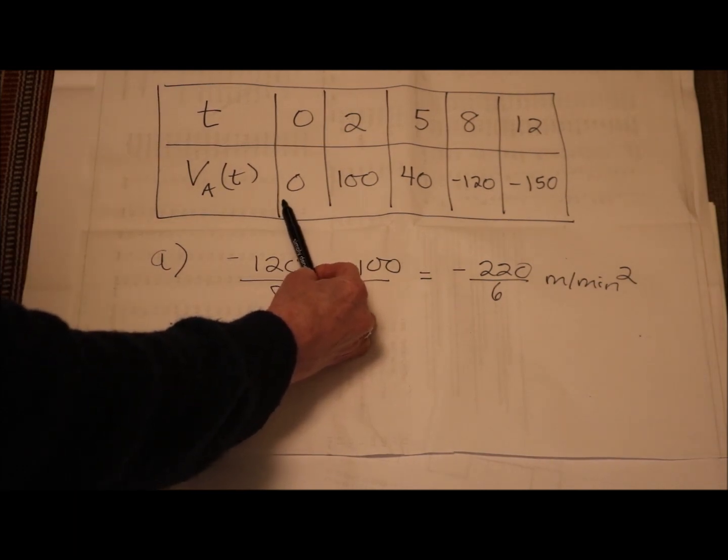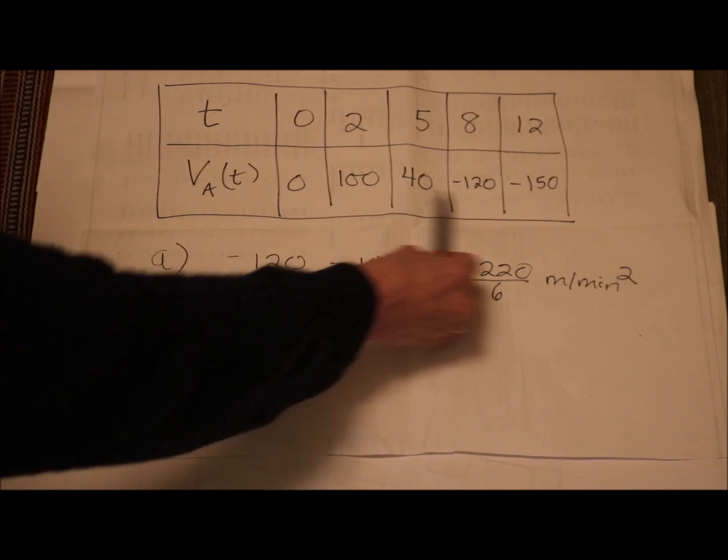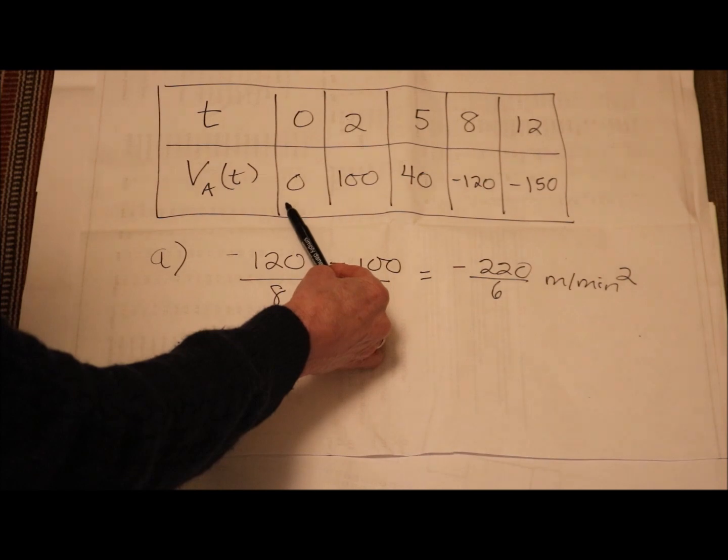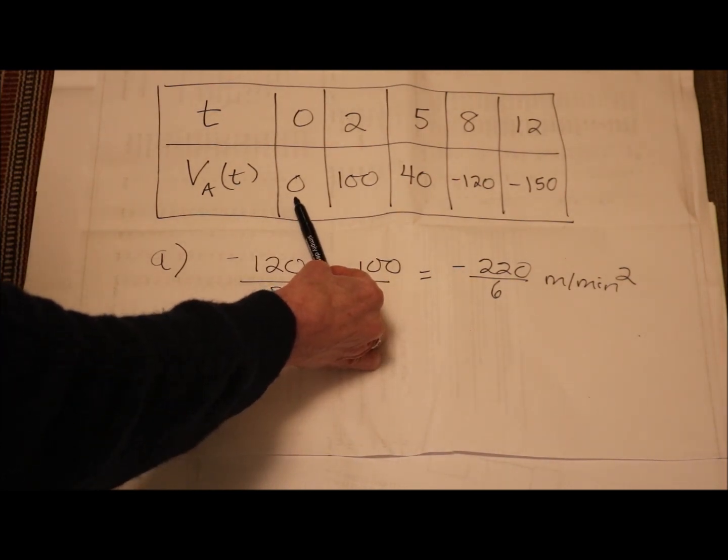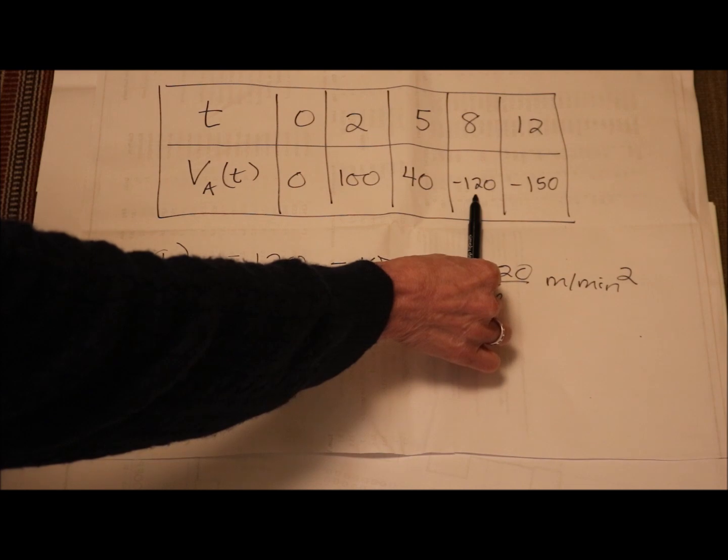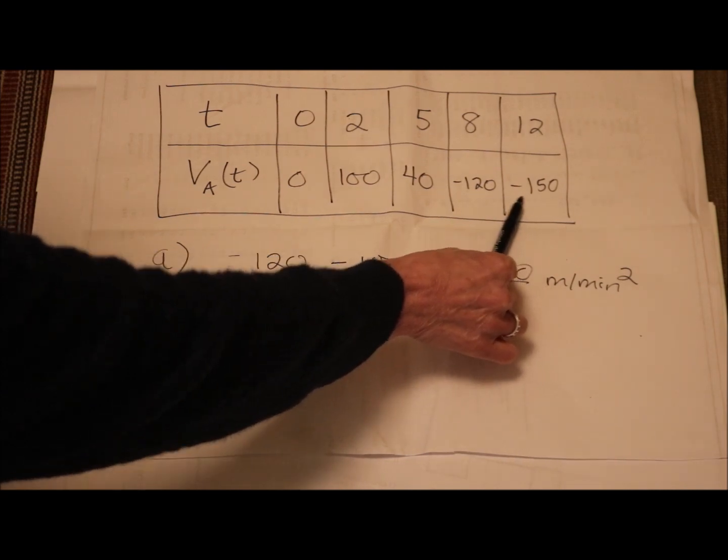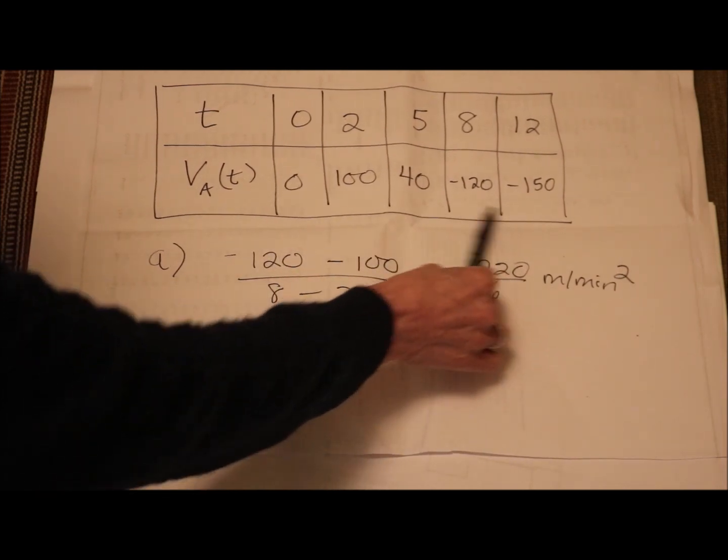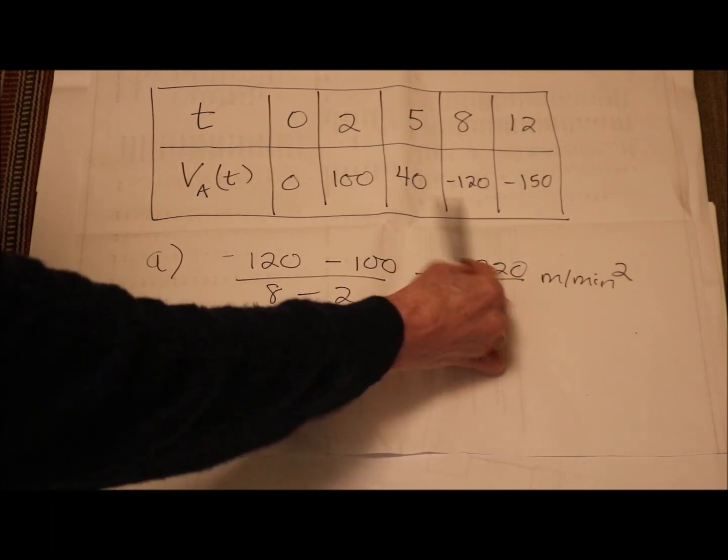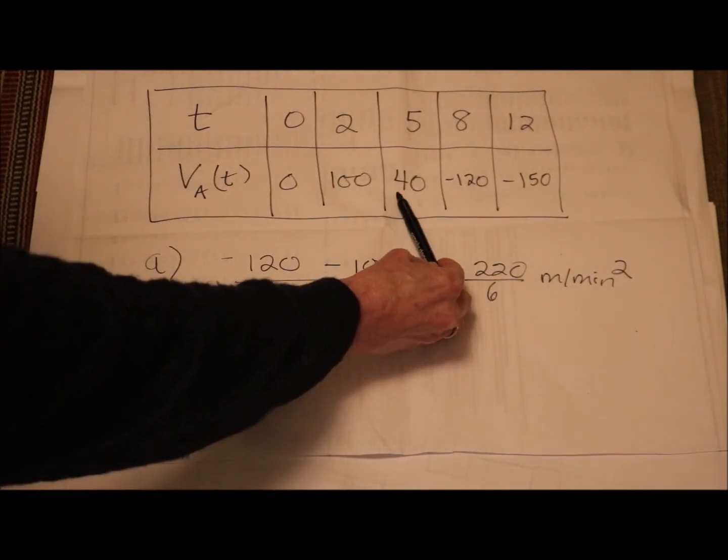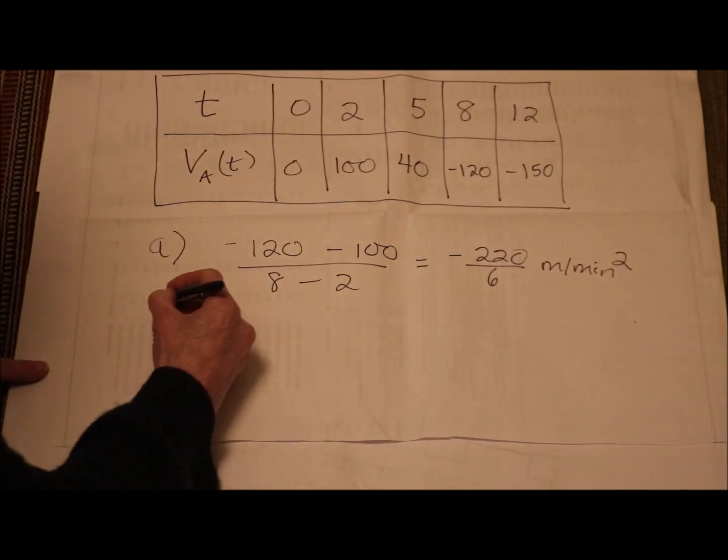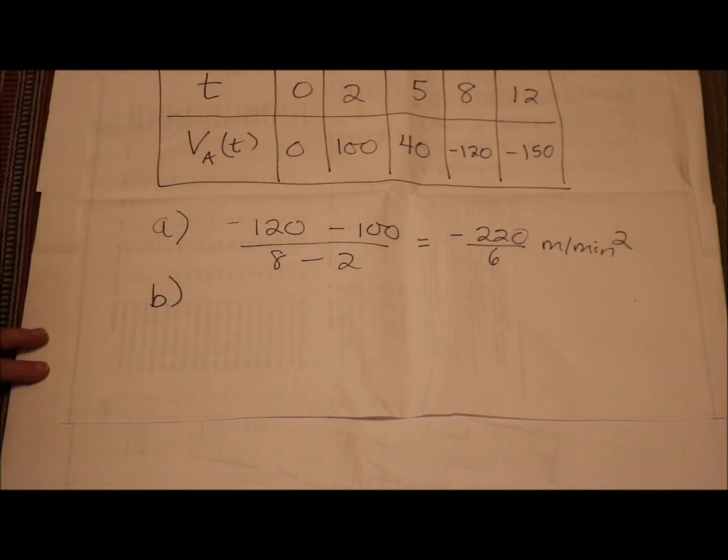So I know there's a velocity for every single time, which makes sense, since it is a train. I'm going 0 meters per minute, then 100 meters per minute, then 40, then changing direction, negative 120 meters per minute, negative 150 meters per minute. Well, somewhere in here, I had to have gone past negative 100 meters per minute, right? Somewhere between on this interval, 5 to 8, if I went from 40 meters per minute to negative 120 meters per minute, by the IVT, the Intermediate Value Theorem, I had to have gone negative 100 meters per second.